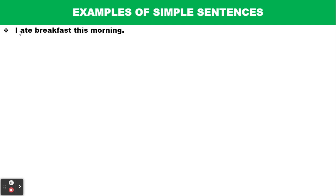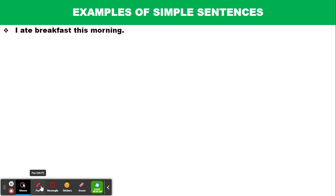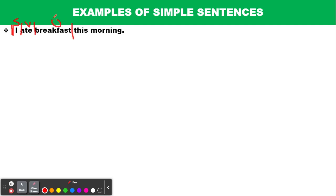In modern linguistics, we can break the sentence down into its various constituents. We begin the analysis with the subject: the subject is 'I.' Then the verb is 'ate.' 'Breakfast' is the object, and 'this morning' is the adjunct. So this sentence has an SVOA structure — subject, verb, object, adjunct.